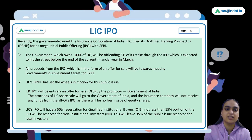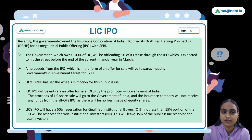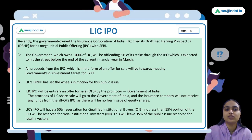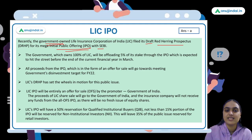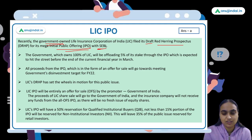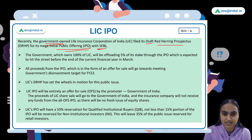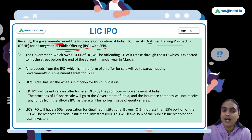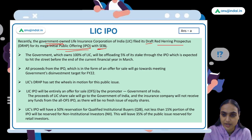Let's first cover the news piece and then we'll come back to the question. Talking about LIC's IPO — we all know LIC, the Life Insurance Corporation of India, is a government-owned firm. This company has filed its Draft Red Herring Prospectus for its IPO with SEBI. LIC was going to come up with its IPO and it has been long awaited, and finally it has filed the draft prospectus with SEBI.